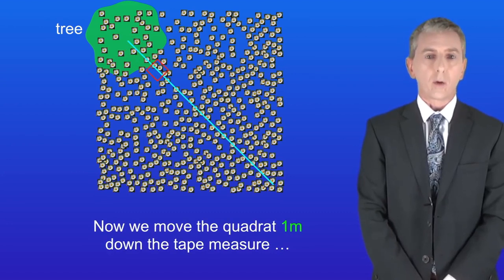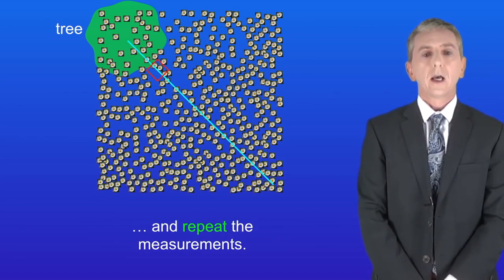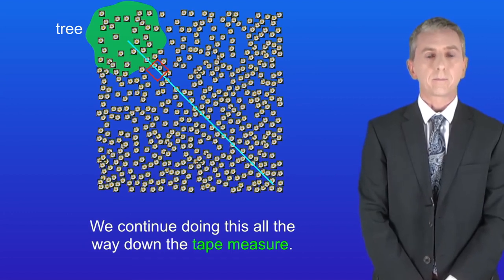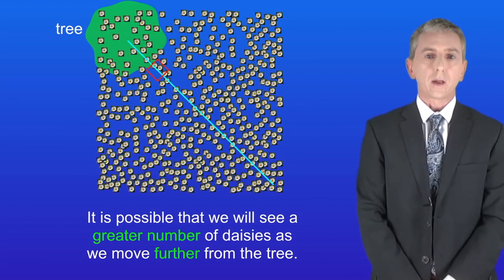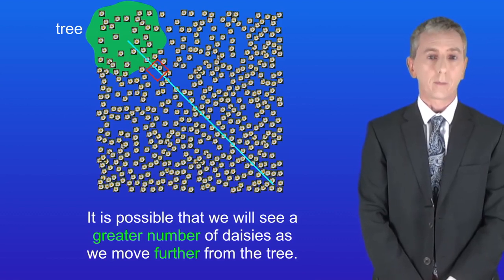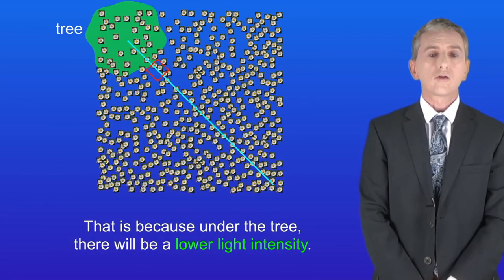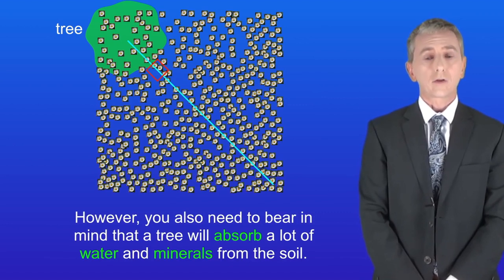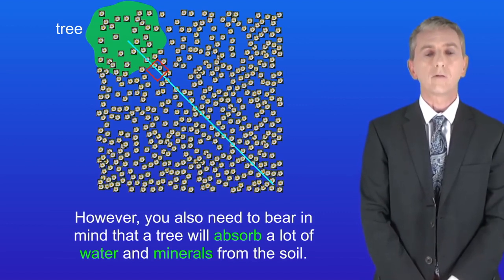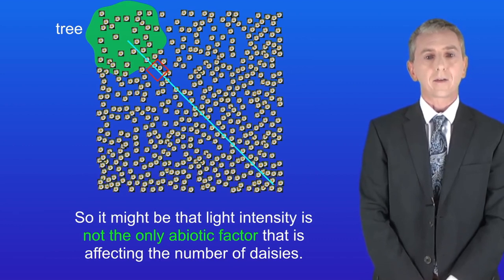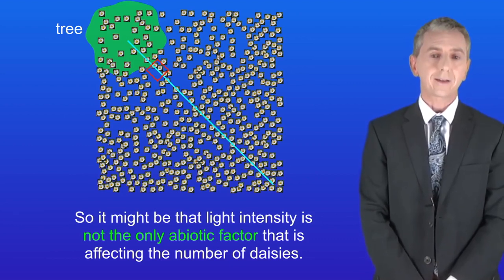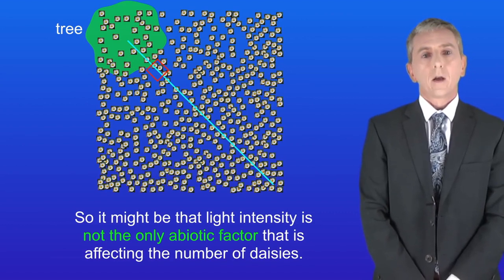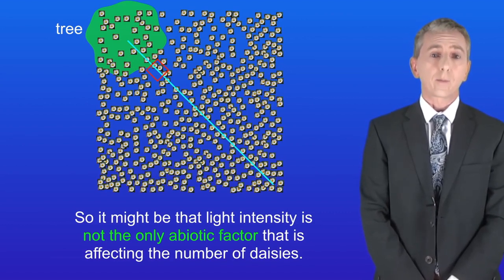Move the quadrat one meter down the tape measure and repeat the measurements, continuing all the way down the tape. We'd expect to see a greater number of daisies as we move further from the tree, because under the tree there's lower light intensity — and plants need light to photosynthesize. Bear in mind that a tree also absorbs a lot of water and minerals from the soil, so light intensity may not be the only abiotic factor affecting the number of daisies.